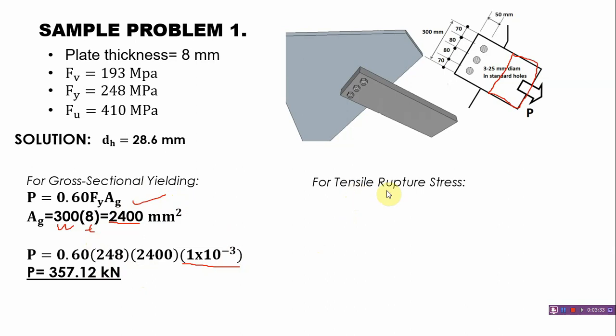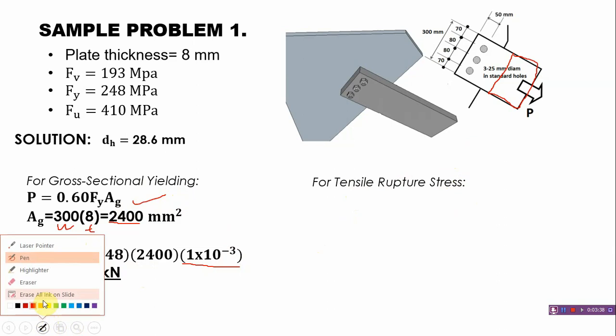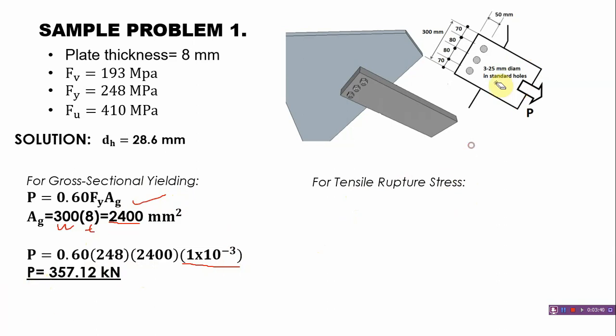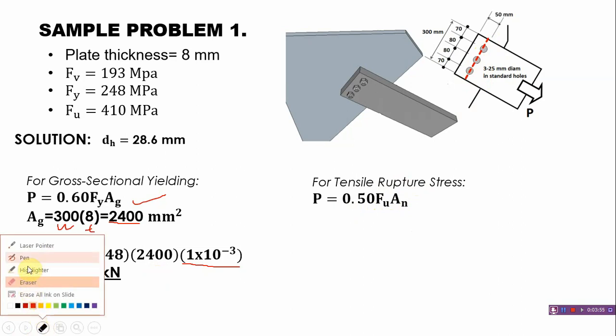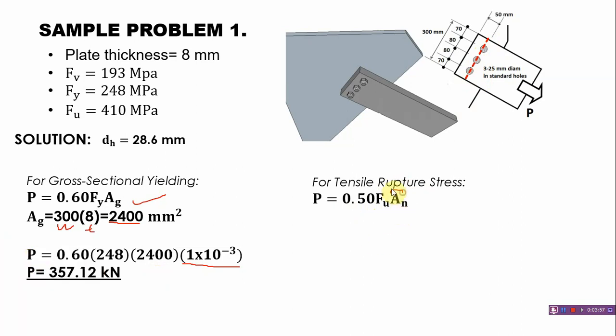Now let's go for tensile rupture stress, the tearing or fracture. This will occur in this portion where the bolts are. We have the formula 0.50F_u × A_n. First we need to get the A_n. It's the total width minus how many bolts times 28.6 times the thickness.